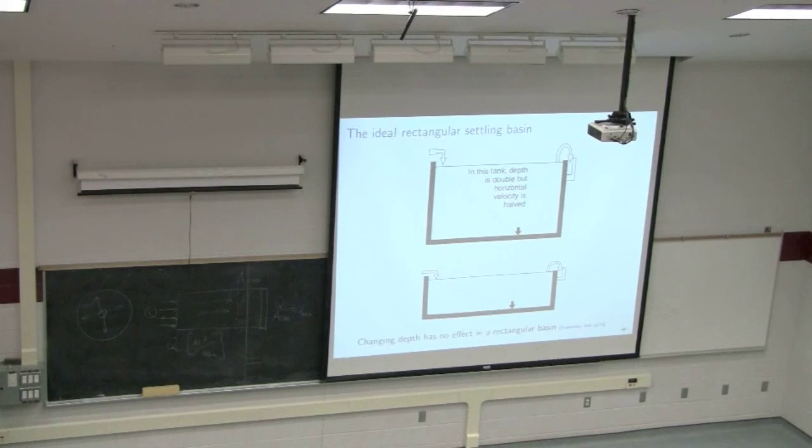So here's why this seems counter-intuitive, that if you double the size of your vessel's depth, it has no effect. When you're doubling that depth, the cross-sectional area through which that Q has to pass, so this flow rate Q, now instead of passing through that depth, is now passing through a larger depth, the velocity in the horizontal direction is halved. So the horizontal velocity is halved, so the particle has got to travel twice the depth, but it's going at half the speed, so it's going to land up at exactly the same point.